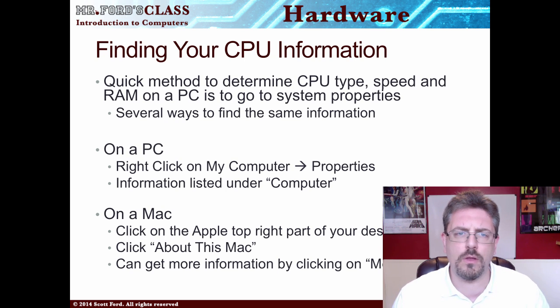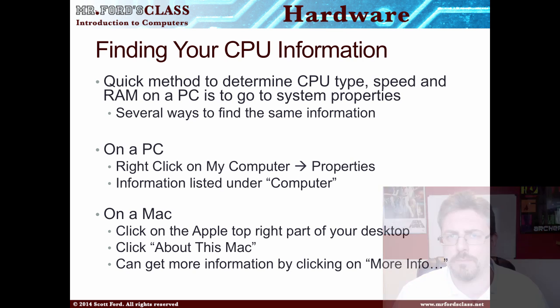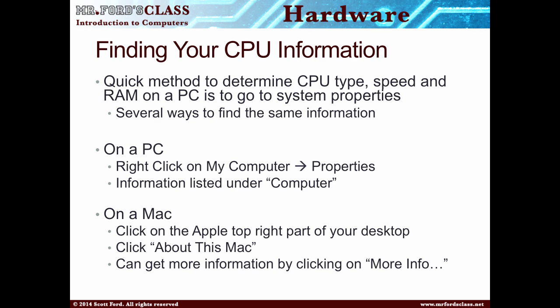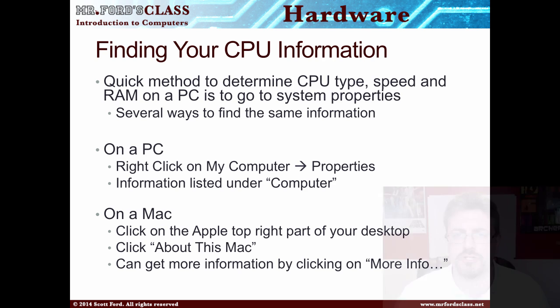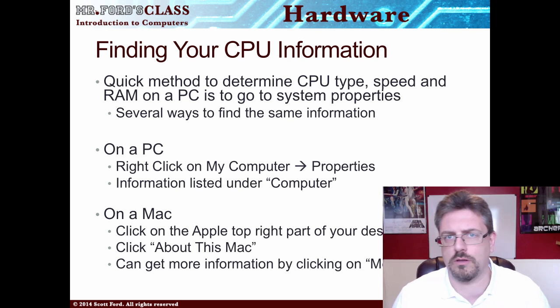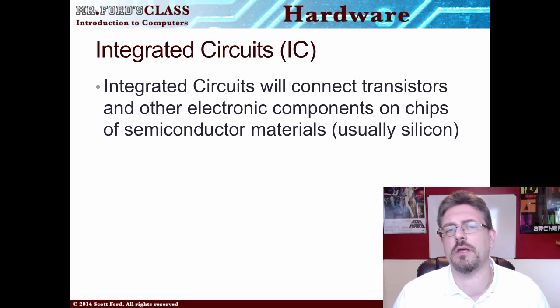So how do you find out what kind of CPU your computer has? There's a very quick method. If you're on a Windows computer, right-click on the My Computer icon and select Properties — the CPU information is listed there. If you're on a Mac, click the Apple logo at the top left of the screen and click About This Mac, and it will tell you what processor you have. There's also a More Info button if you want additional details about your computer. Now we have a concept called integrated circuits.